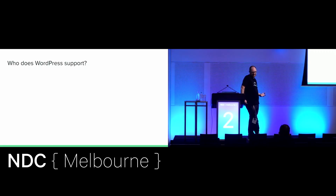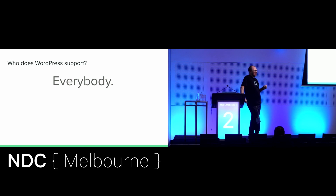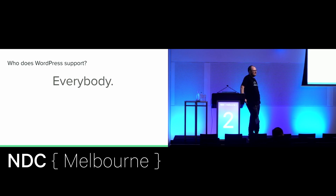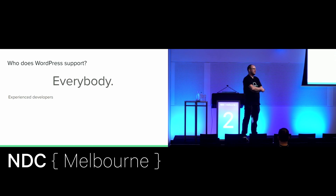When talking about WordPress accessibility standards, we've got to consider who they're supporting. WordPress is without question the most used piece of open source software on the internet - apparently around 60% of all content management systems and 30-something percent of all websites. That means it's supporting experienced developers - people who come from C# backgrounds, all sorts of backgrounds, who are excellent engineers and have to access this code. And new developers - quite a lot of developers got their start with WordPress.